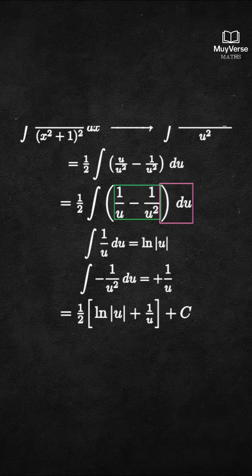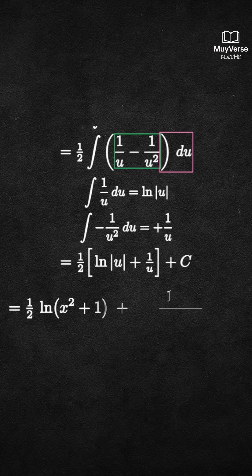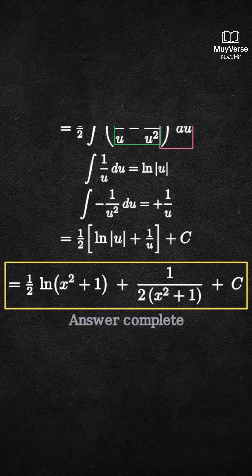Finally, substitute back u equals x squared plus 1. The result is 1 half times the natural log of (x squared plus 1) plus 1 divided by 2 times (x squared plus 1) plus C. That is the complete evaluation, shown with a clear substitution and clean algebra.